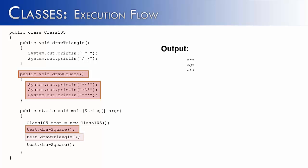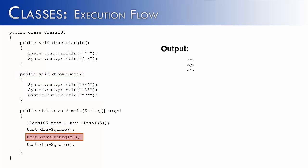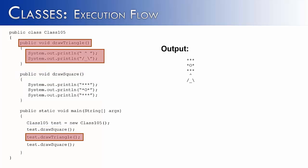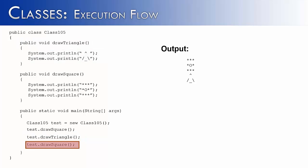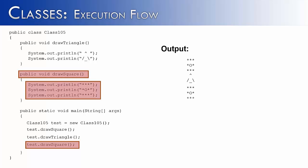Next it comes back to the main method and calls the drawTriangle method. It goes to the drawTriangle method and draws a triangle on the screen. Finally it comes back to the main method one last time. The only code left is to drawSquare once again, so it finds the drawSquare method, executes what's inside the method body, and our final output shows two squares and one triangle in between.